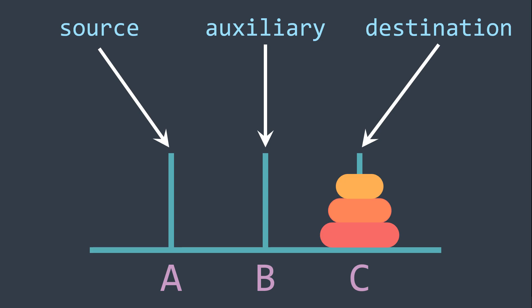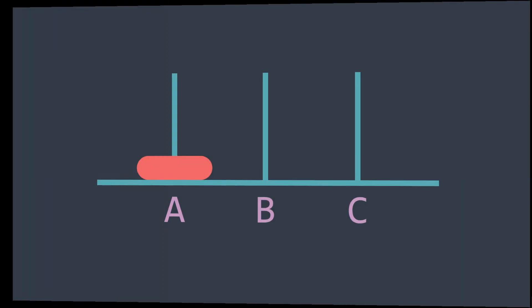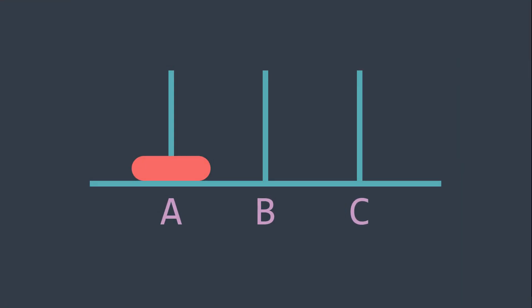Now we can start. Let's solve the puzzle for N equal to 1, with one disk in other words. When we have only one disk, we just take it from source to destination, from A to C in our case.